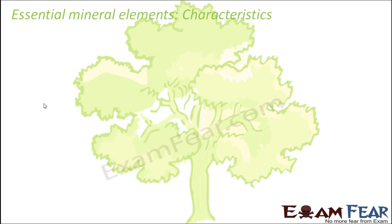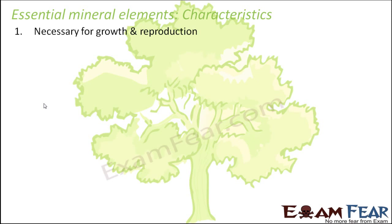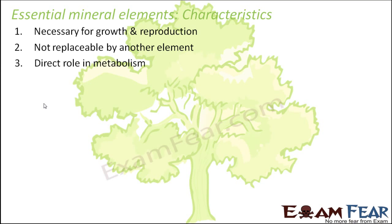Now let us look at the main characteristics which define an essential mineral element — how do we know which mineral elements are essential. First, they are necessary for growth and reproduction: they must be required for the completion of the life cycle of a plant. Second, they are not replaceable by another element — if nitrogen is necessary for a plant, it cannot be replaced by any other mineral; nitrogen itself is required. Third, they have a direct role in metabolism, such as assimilation, excretion, or photosynthesis — they play an important role in all metabolic activities inside a plant's body.